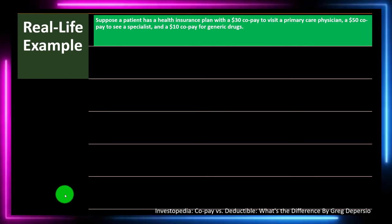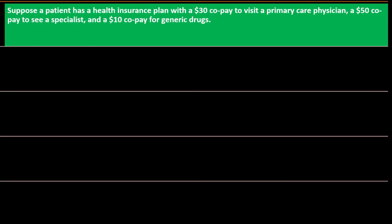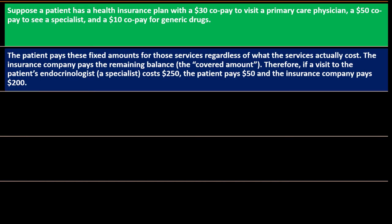Here's a real-life example. Suppose a patient has a health insurance plan with a $30 co-pay to visit a primary care physician, a $50 co-pay to see a specialist, and a $10 co-pay for generic drugs. The patient pays these fixed amounts for those services regardless of what the services actually cost. The insurance company pays the remaining balance. For example, if a visit to an endocrinologist costs $250, the patient pays $50 and the insurance company pays the remaining $200.